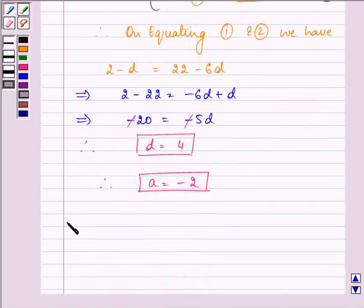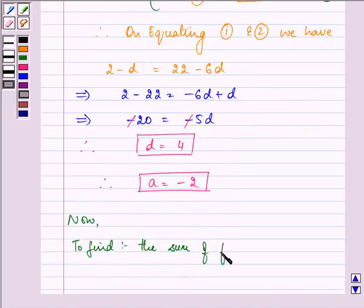Now, we need to find out the sum of first 30 terms of an AP whose first term is minus 2 and the common difference is 4.